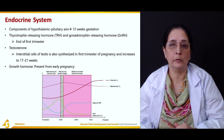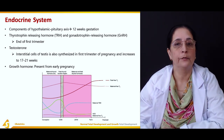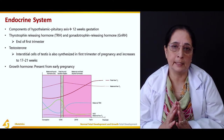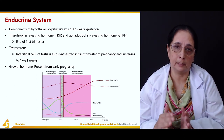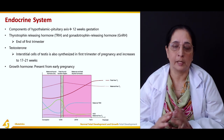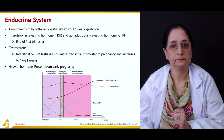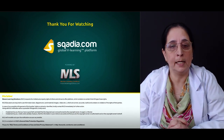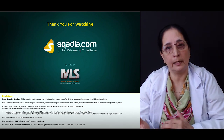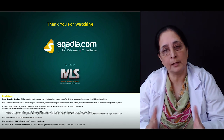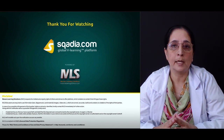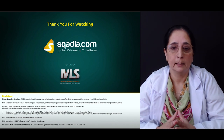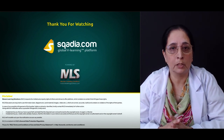Testosterone from the interstitial cells of the testis is also present in the first trimester and increases at about 17 to 21 weeks. Growth hormone is also present from early in pregnancy. So the endocrine system essentially starts functioning early in the first trimester. That covers fetal development and the development of the endocrine, respiratory, and cardiovascular systems.